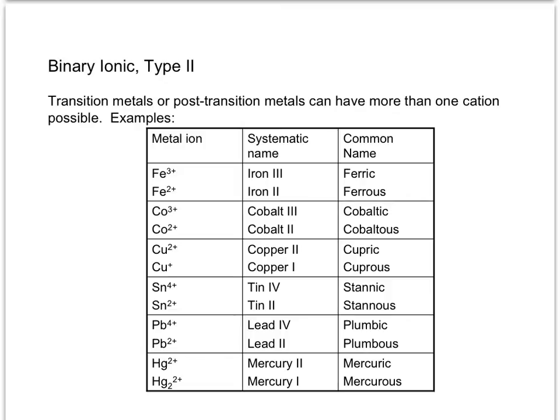Here are examples: iron can be +3 or +2, cobalt +3 or +2 — a mix of transition and post-transition metal ions. You need to know the systematic names by heart. The common names are interesting but won't be tested. Do you have to memorize the different charges? No — you can figure it out from the formula. But you do need to know that transition and post-transition metals can have more than one charge.